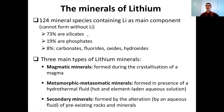Among those minerals we can sort them into three main types. Magmatic minerals, formed during the crystallization of a magma. Metamorphic and metasomatic minerals, formed in the presence of a hydrothermal fluid — a hot aqueous solution fully packed with different chemical elements. And finally, secondary minerals, formed by the alteration at the surface of the planet, usually by an aqueous fluid acting on pre-existing rocks and minerals.